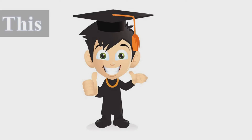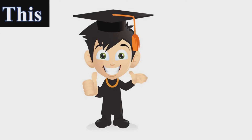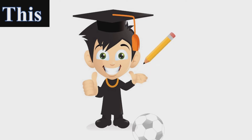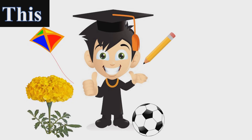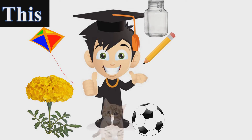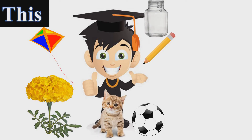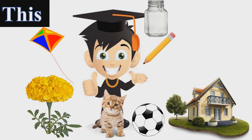Hi friends, my name is Fish, and I'm going to tell you about the usage of 'this.' This is a pencil. This is my football. This is a beautiful flower. This is a kite. This is a jar. This is a cat. This is my home. This is my book.